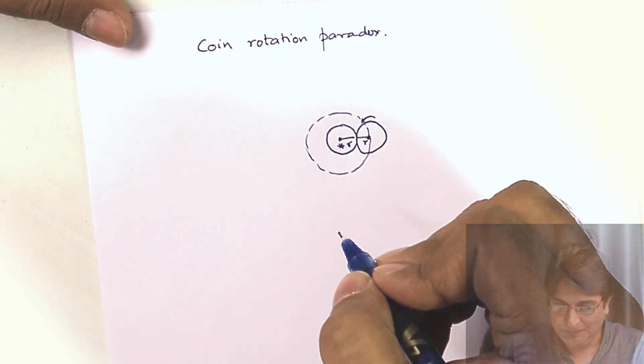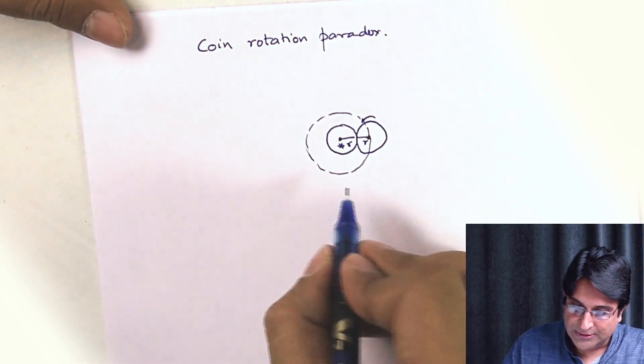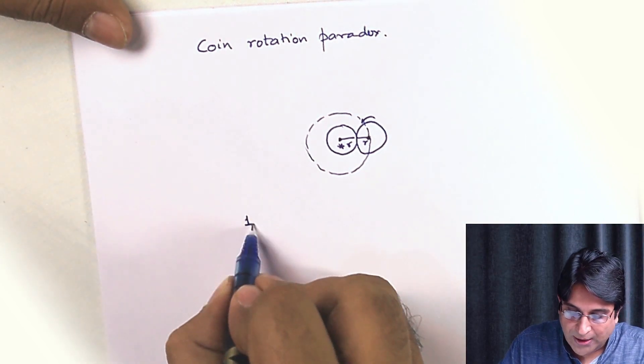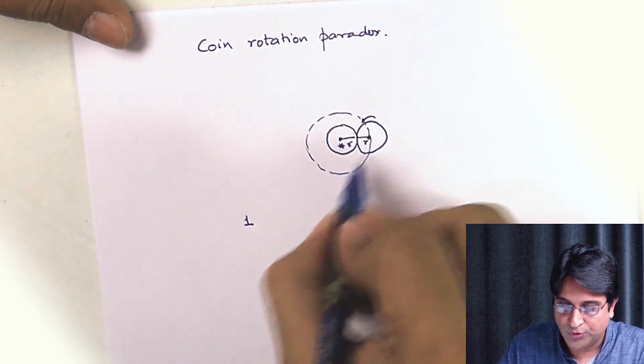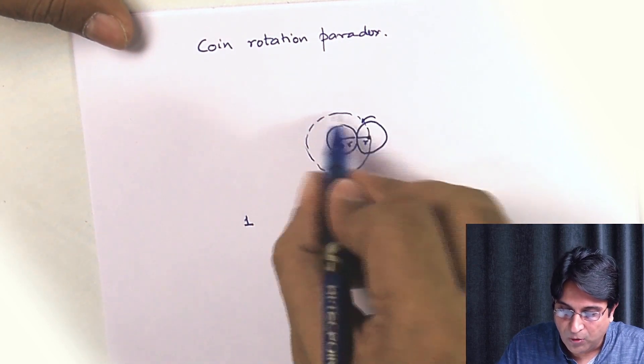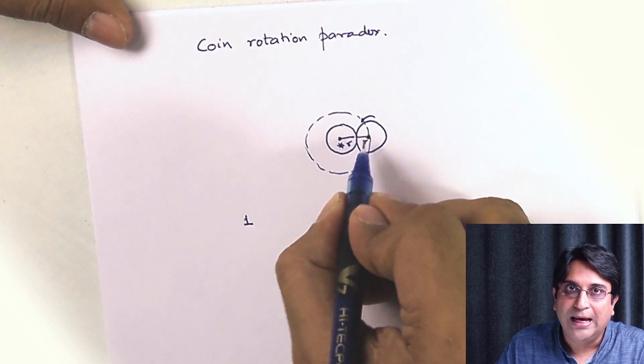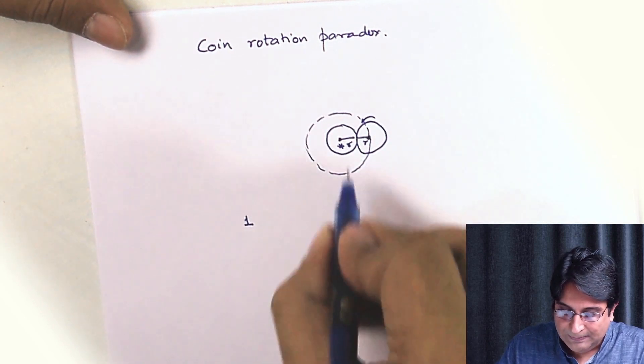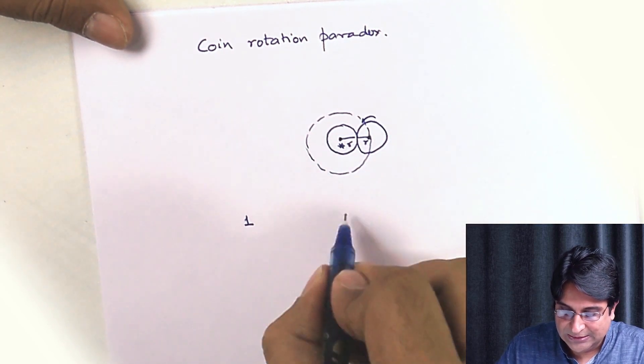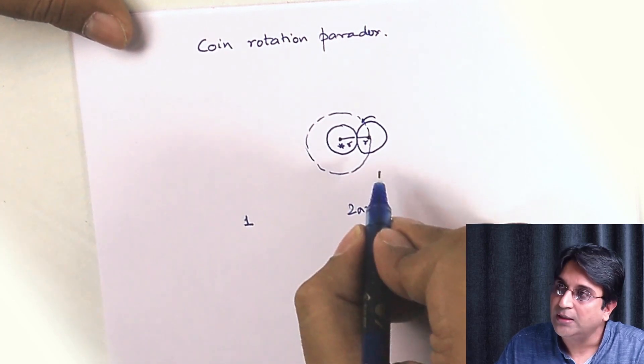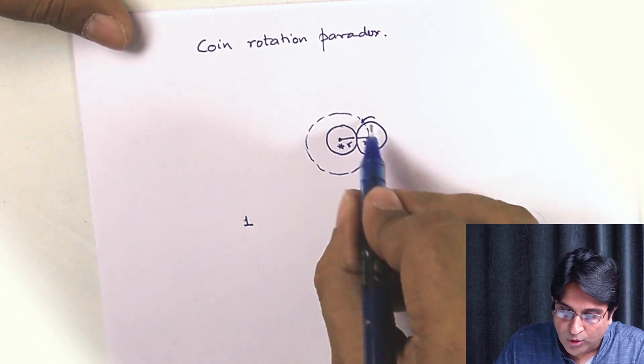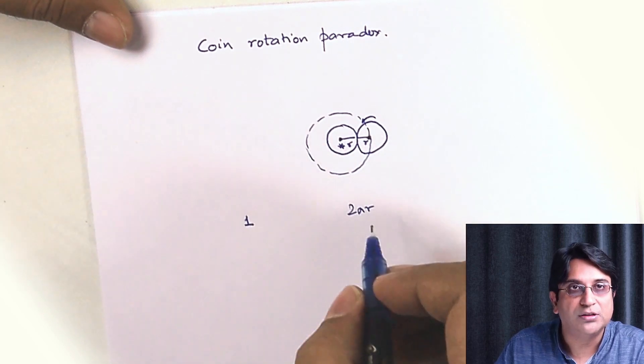So I hope you have an answer now. What generally happens is that people think it should be one spin as it goes around, or it should spin about once as it comes back. And this happens because people think that this distance is 2πR, right? And as a coin rotates once, it travels a distance 2πR.